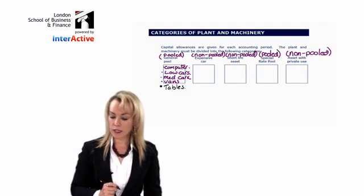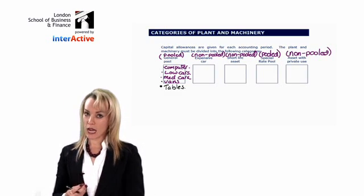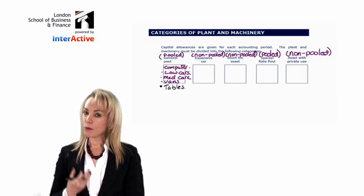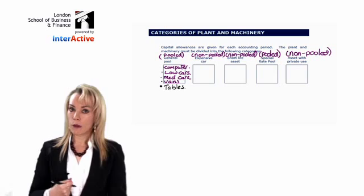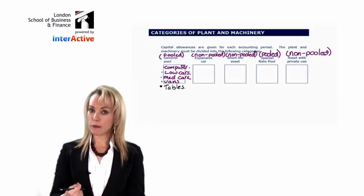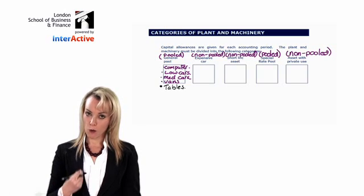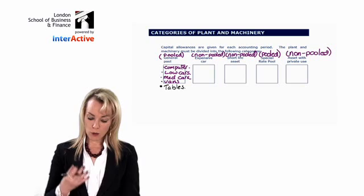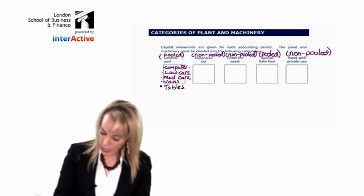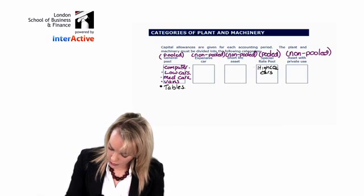So some examples of items that go in the general pool. Now, the thing about tax is that it changes every year. When we're talking about tax today, if you're buying a car, the car is defined as low emission, medium emission or high emission. Depending on whether the car is low or medium emission or high emission will determine where it goes. A medium or low emission car goes in the general pool and a high emission car goes into the special rate pool.